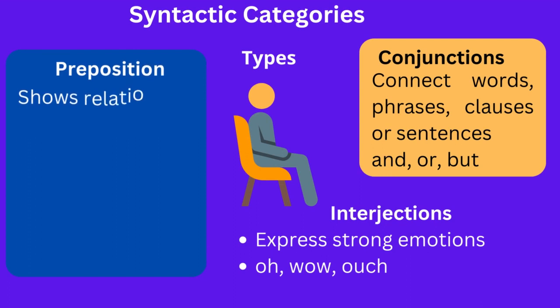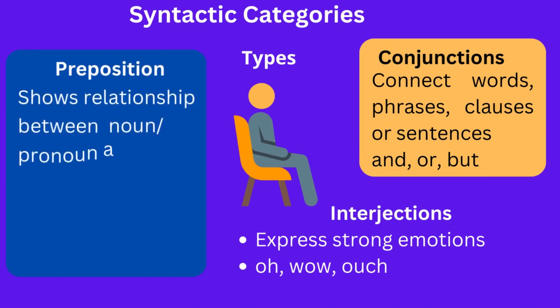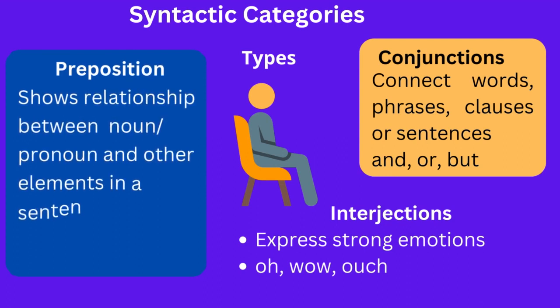The next important syntactic categories are preposition, conjunction, and interjection. Prepositions are words that show the relationship between a noun or pronoun and other elements in a sentence by indicating location, direction, and time — like in, on, at, and by. For example, 'she is sitting on the chair' or 'the cat is under the table.' Prepositions often come before a noun or pronoun to form a prepositional phrase.